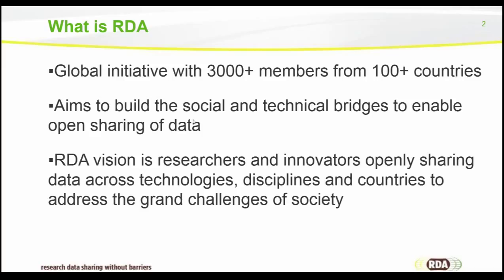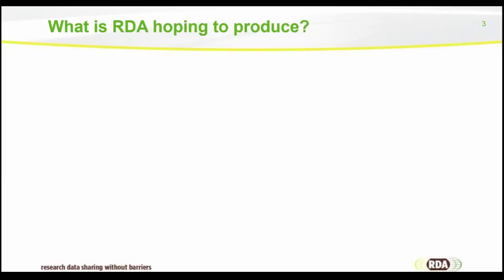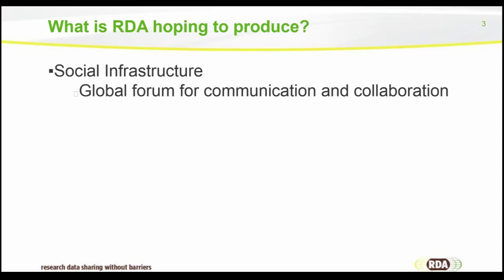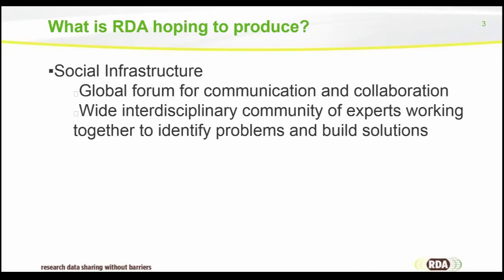Those are the official marketing speak of what RDA is, but more importantly, what is RDA hoping to do and produce? There are two main points. One is social infrastructure. To that end, RDA is providing a global forum for communication and collaboration, and a wide interdisciplinary community of experts working together to identify problems and build solutions. The interdisciplinary point is really important because particularly for the humanities, it's an opportunity to reach outside of our discipline and get access to experts from other communities.